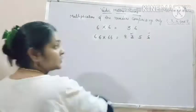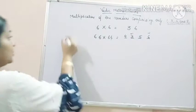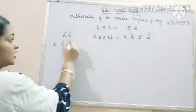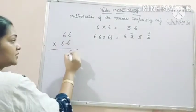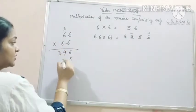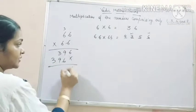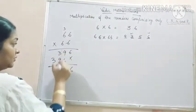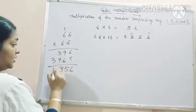4356. You can check your answer by traditional multiplication. 6×6 are 36, 6×6 are 36, 39, 6×6 are 36, 3, 39, 6, 15, 1 carry, 13, 4.